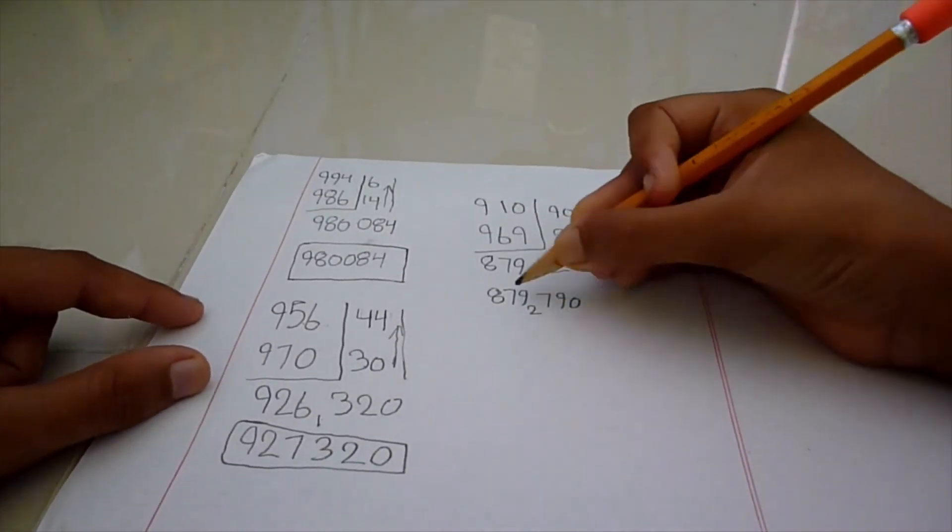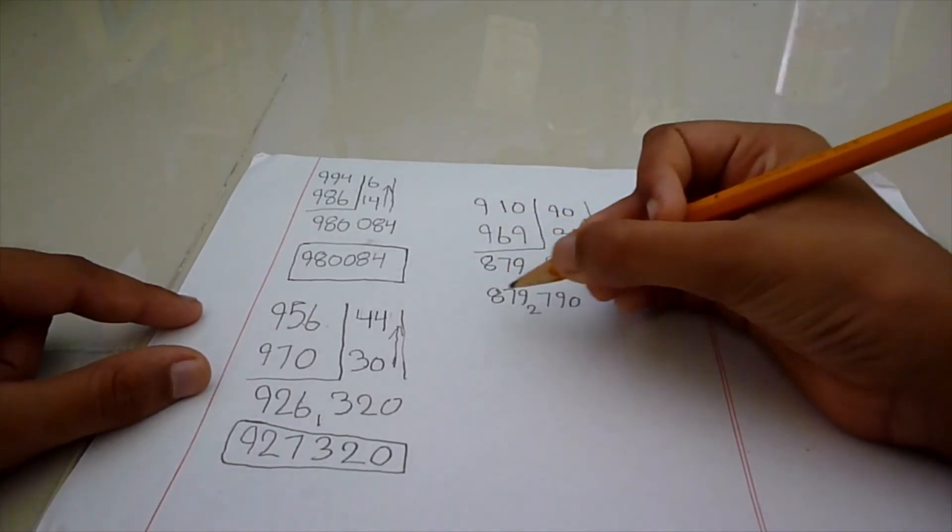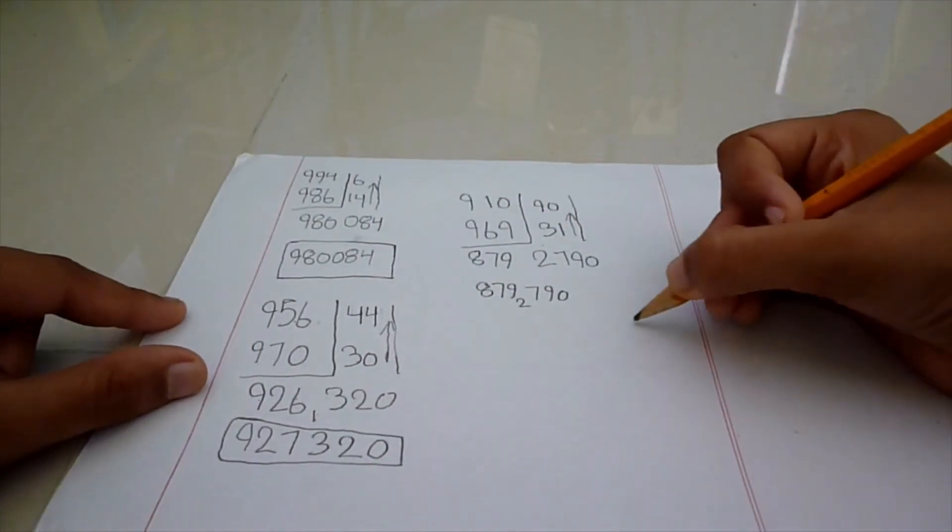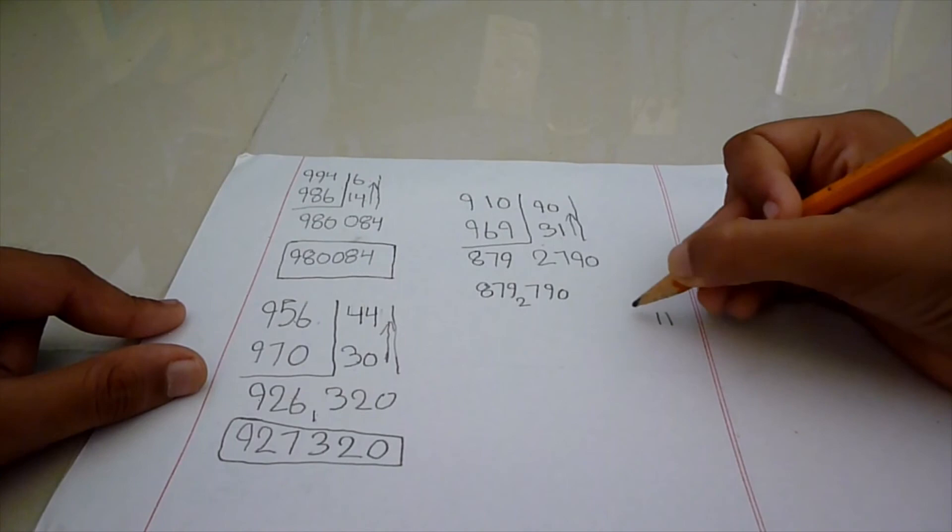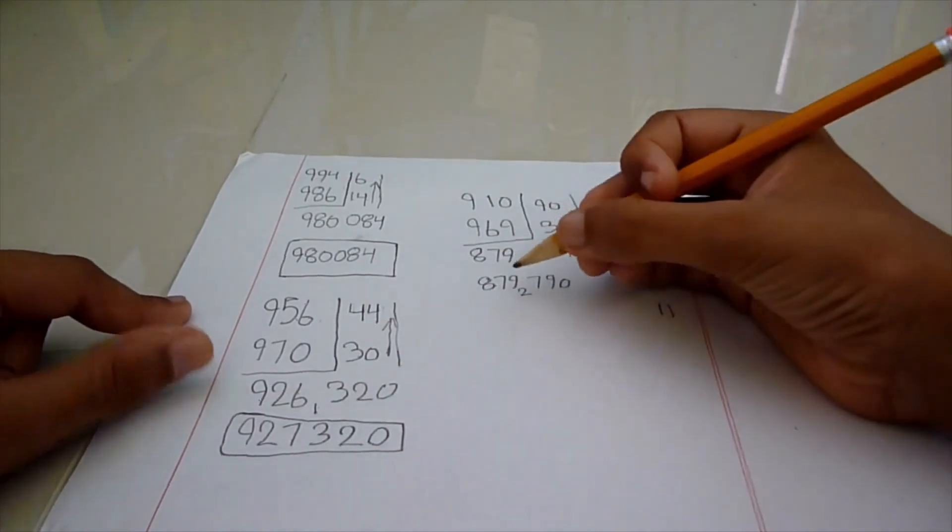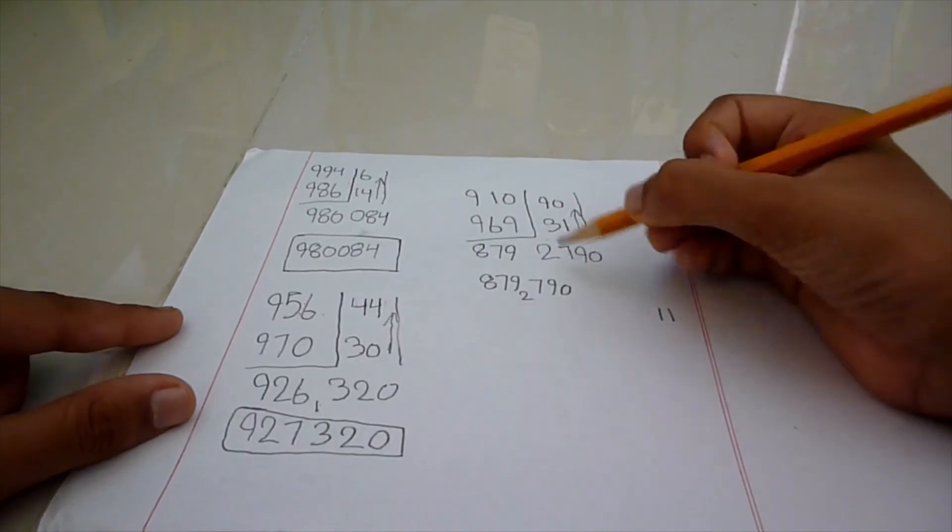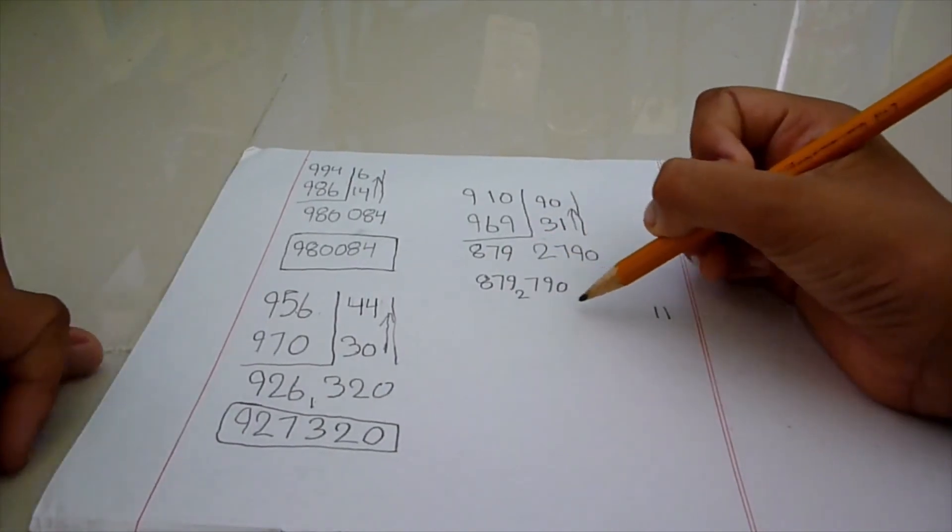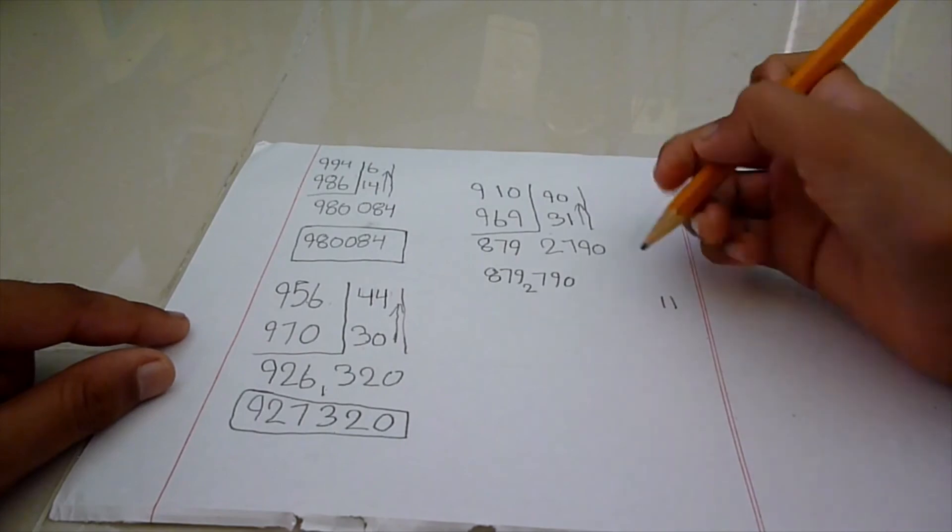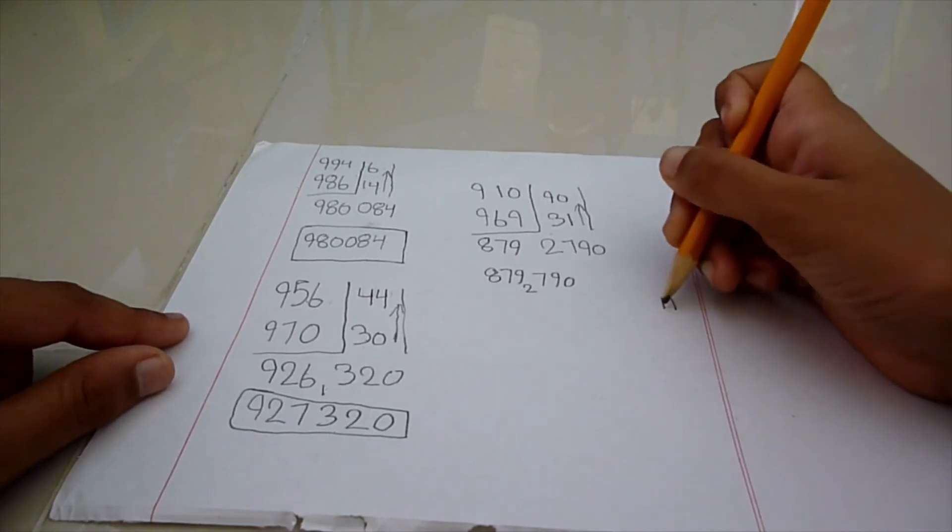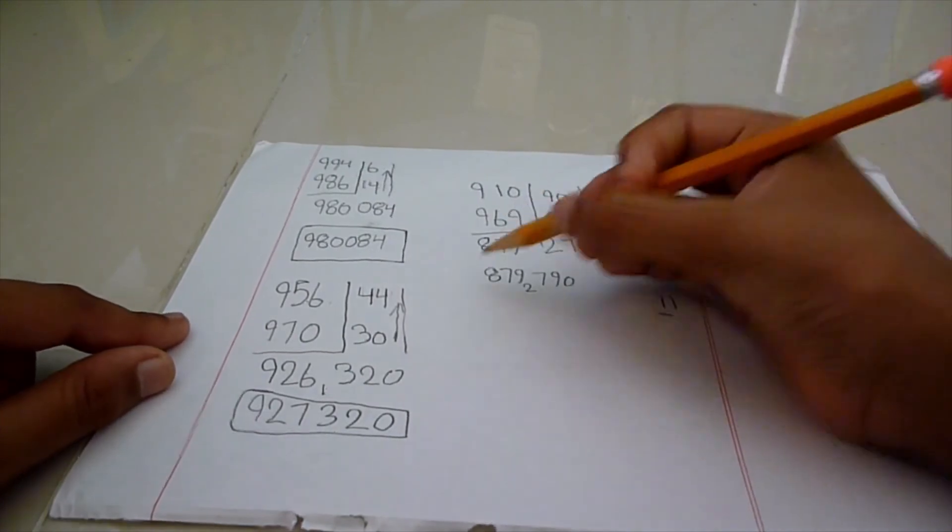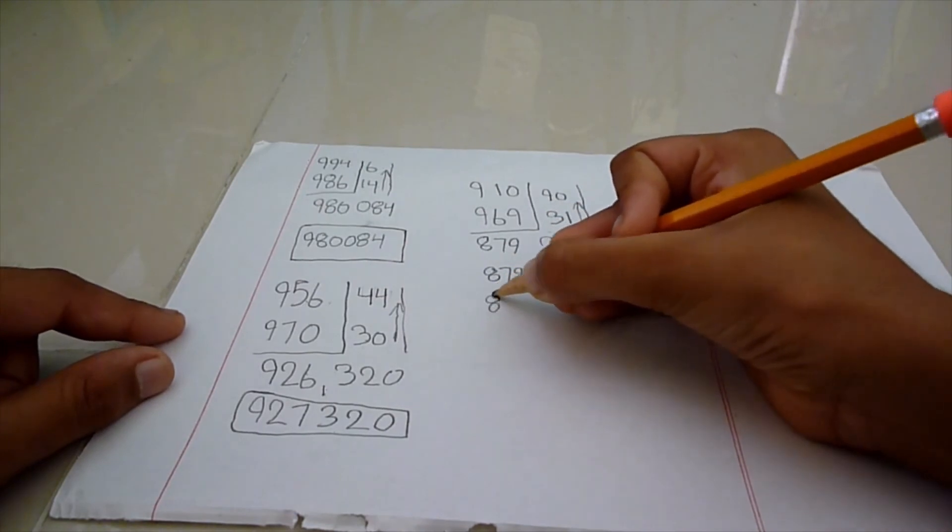Now, you have to add 2 to 9, which will be 11. So, 11 will come here. Then, 11 cannot be written here as only a 6-digit number as the answer. So, we are going to have to be writing 1 here and adding this tenth one to 7, which will be 8, 8.